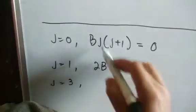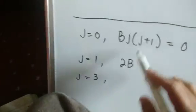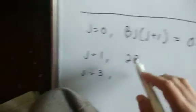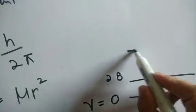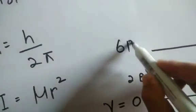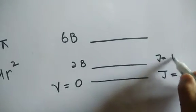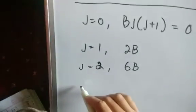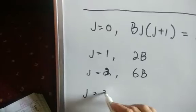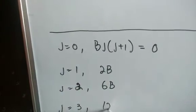So energy is 2B. If J equals 2, that becomes 6B. So higher energy is 6B. When J equals 3, 3×4=12, so the energy becomes 12B.